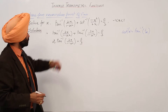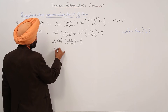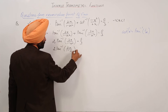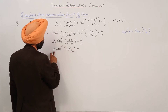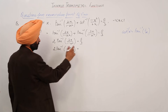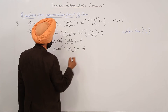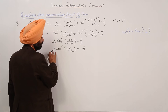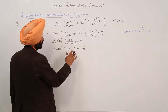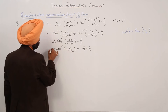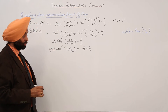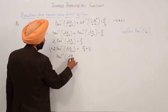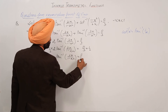Adding this one and this one — same numbers — it further becomes 2 tan inverse (2x upon 1 minus x square) is equal to pi by 3. Now I have to remove this 2, so dividing both sides by 2. We are having tan inverse (2x upon 1 minus x square) is equal to pi by 6.